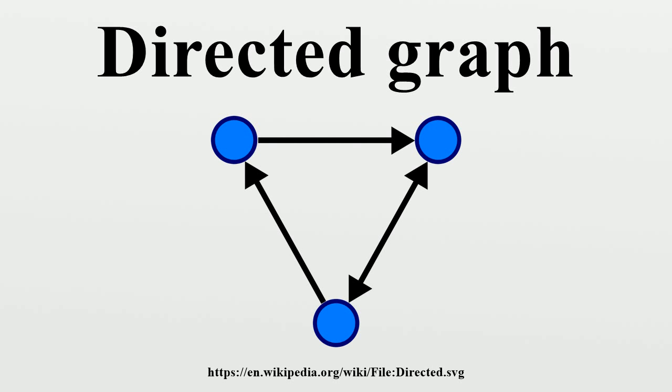Degree sequence: The degree sequence of a directed graph is the list of its indegree and outdegree pairs. The degree sequence is a directed graph invariant, so isomorphic directed graphs have the same degree sequence. However, the degree sequence does not, in general, uniquely identify a directed graph. In some cases, non-isomorphic digraphs have the same degree sequence.